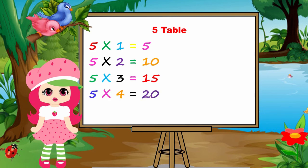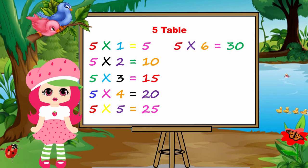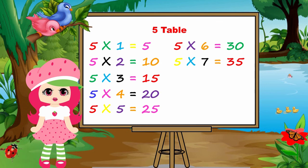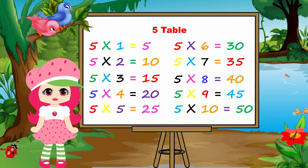Five fours are twenty. Five fives are twenty-five. Five sixes are thirty. Five sevens are thirty-five. Five eights are forty. Five nines are forty-five. Five tens are fifty.